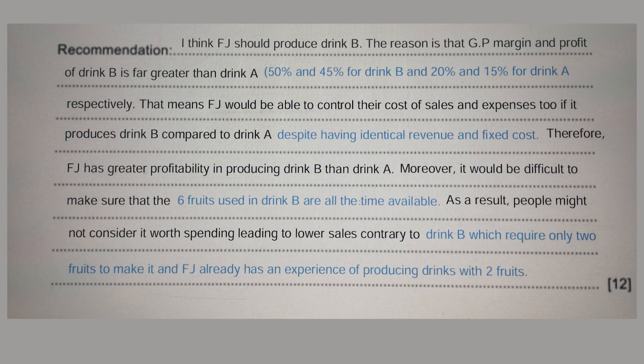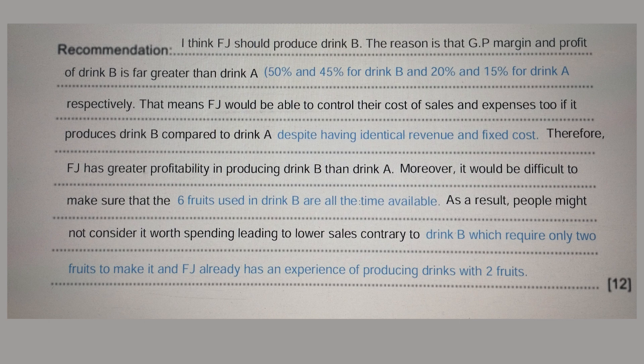The fixed cost is the same for both drinks, so I cannot say their fixed cost is lower. But because revenue is the same for both options and fixed cost is not increasing, it means they are able to control their fixed cost. Despite having identical revenue and fixed cost, Drink B still generates higher GP margin and profit margin — because cost of sales and expenses are not increasing in the same proportion as revenue. Therefore FJ has greater profitability in producing Drink B than Drink A.